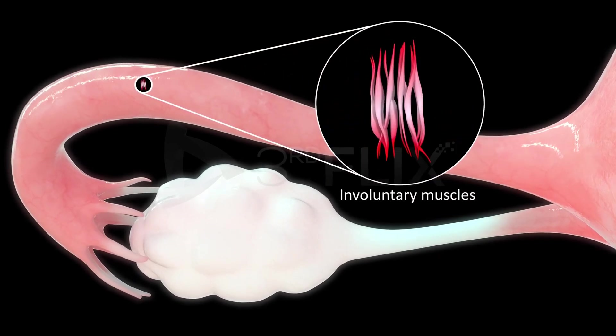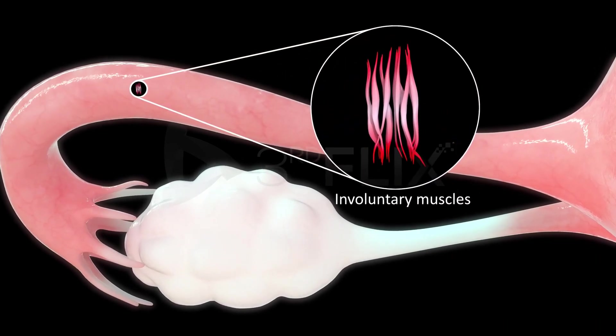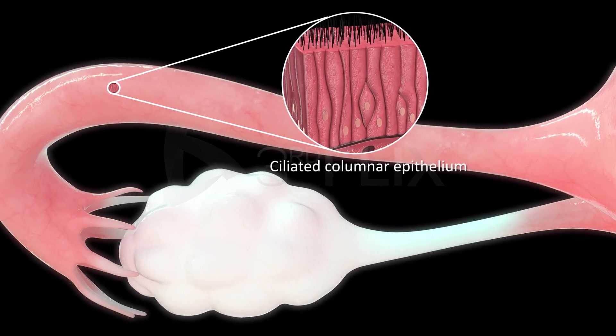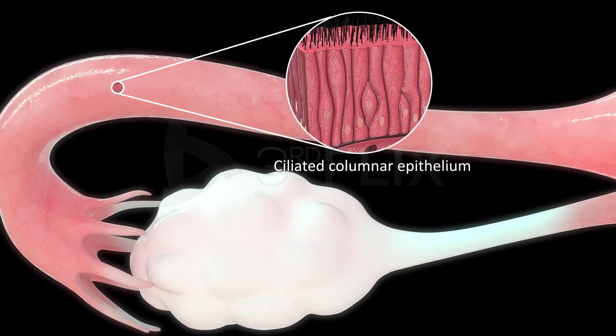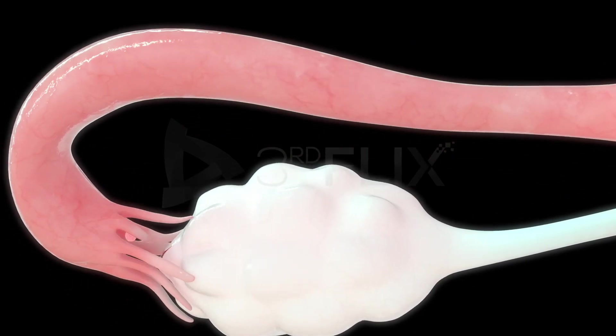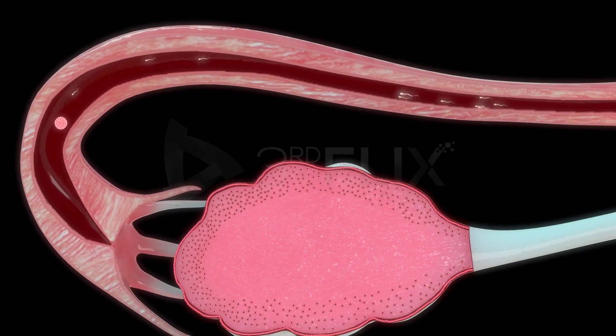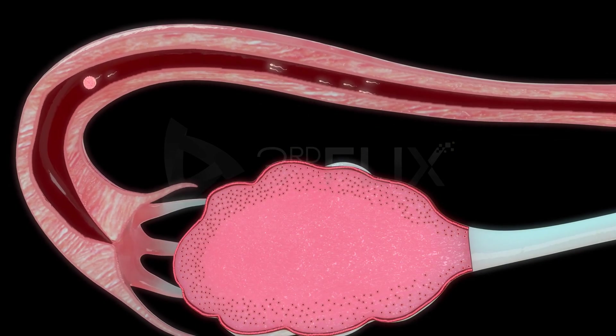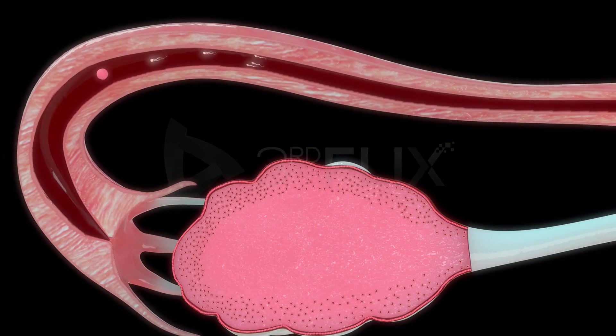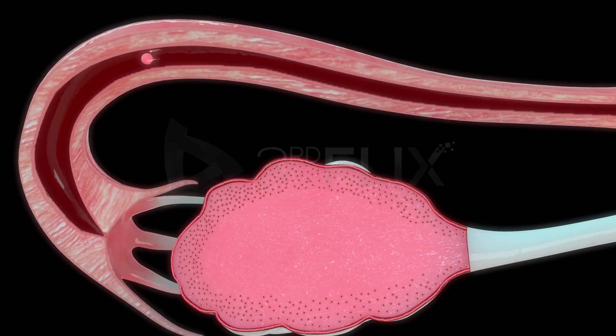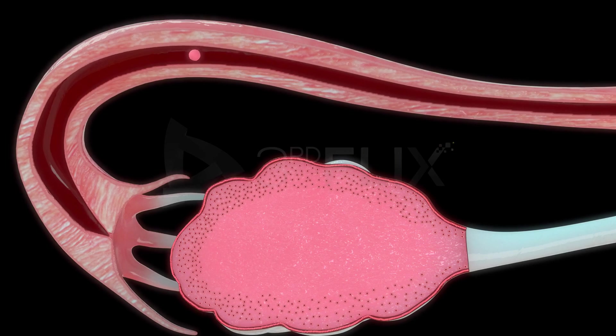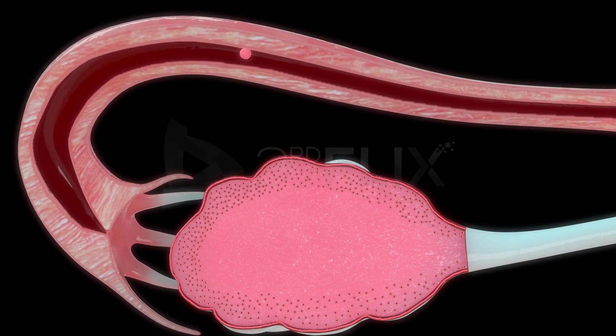The fallopian tube has smooth involuntary muscles in its walls and is internally lined by ciliated columnar epithelium. The fallopian tube exhibits peristalsis that aids in the movement of sperms towards the ampulla. Peristaltic and ciliary movements conduct the ovum or zygote towards the uterus.